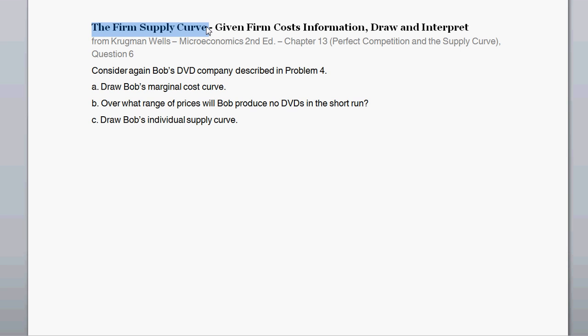So where does the firm supply curve come from? This question is borrowed from Krugman-Wells Microeconomics, second edition, from the chapter on perfect competition and the supply curve. Number one is, let's draw Bob's marginal cost curve. We discussed marginal cost and how to calculate it in a previous video, which I'll link in the video description.